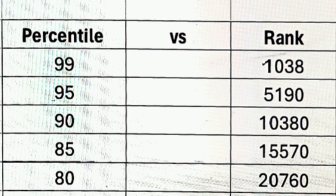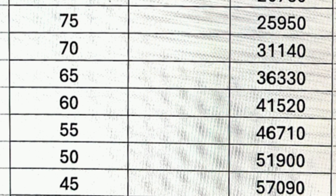At 80 percentile, you will mostly get into top 20 colleges with CSC and ECE options. At 75 percentile, your rank will be around 25,950 and you will still get a good number of CSC specializations in colleges ranked top 15 to top 25.